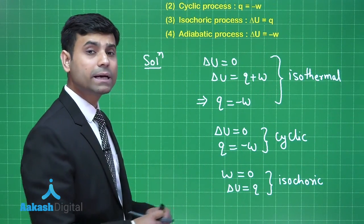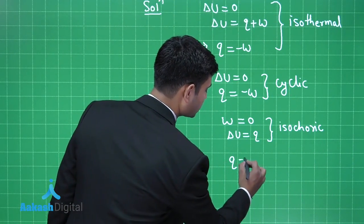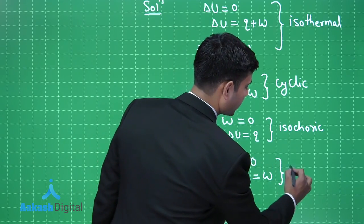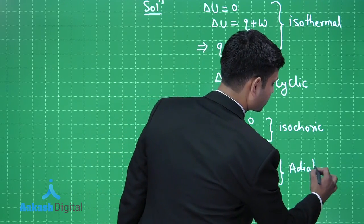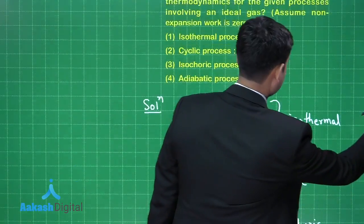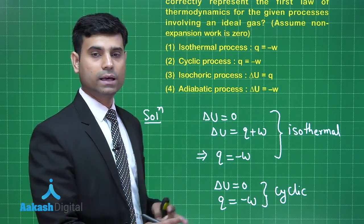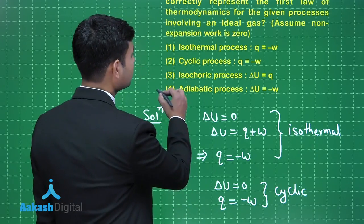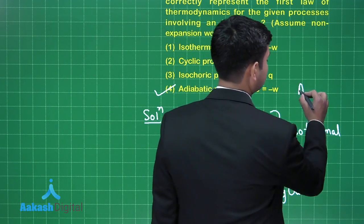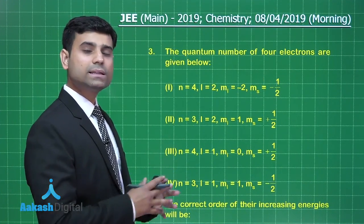For the adiabatic process, there is no heat exchange, so Q = 0. Therefore delta U = W for an adiabatic process. However, option 4 states that for an adiabatic process delta U = -W, which is incorrect — it should be delta U = W. So the incorrect statement, and hence the correct answer for this question, is option 4.